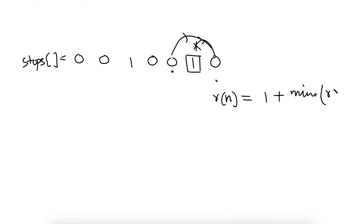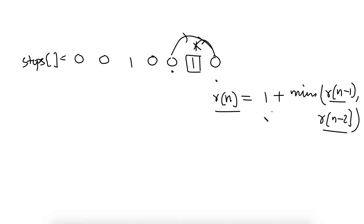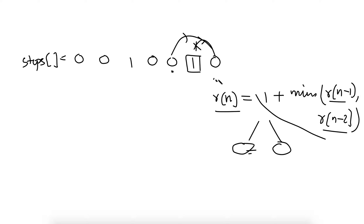The recurrence relation is r(n) = 1 + min(r(n-1), r(n-2)). This is a dynamic programming solution because r(n) is solved in terms of r(n-1) and r(n-2), and there is overlap — while solving r(n-1), we again solve for r(n-2) and r(n-3). There is recursion, subproblems, and overlap, making it a candidate for dynamic programming. You can reach step n from step n-1 or n-2 because only one or two steps are allowed.